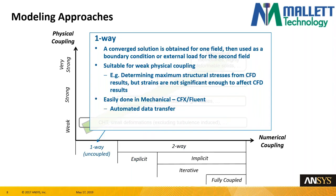In one-way coupling, a converged solution field is obtained for one field and then used as a boundary condition or external load for the second field. It's suitable for very weak coupling — for example, you can determine maximum structural stresses from CFD results, but the strains are not significant enough to affect the flow field. This is very easily done with Mechanical, CFX, or Fluent; the data transfer is all handled — it's just a matter of connecting up wires in the project page.